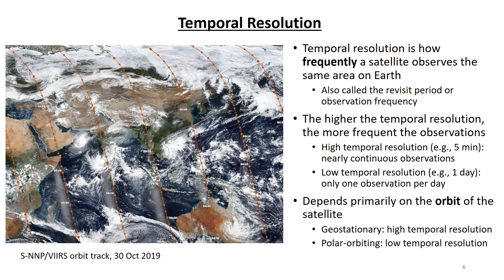Temporal resolution is a satellite term that refers to how frequently a satellite observes the same area on the Earth. It's also called the revisit period or observation frequency, and it is expressed as a period of time. You can think of it as: how long do I have to wait to see the next observation of the event or feature I'm interested in? The higher the temporal resolution, the smaller the specified time interval, the more frequent the observations. High temporal resolution — five minutes for example — means the satellite makes observations every five minutes or nearly continuously. Low temporal resolution — one day for example — means the satellite only makes one observation per day of a given location.